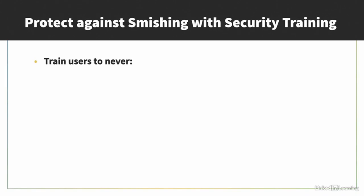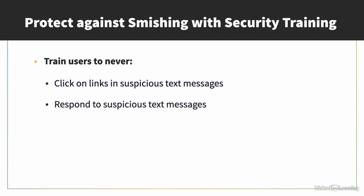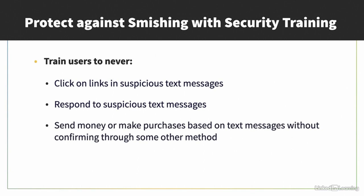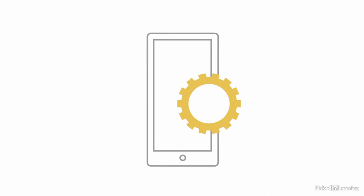When it comes to smishing, the best way to protect against this threat is also with security training. Train users how to spot suspicious text messages. They should be trained to never click on links in suspicious text messages, respond to suspicious text messages, or send money based on text messages without confirming through some other method like a phone call. If you get repeated unwanted text messages from the same number, those can be blocked in the phone settings for both iPhone and Android. Also, check to see if your smartphone has other settings options to filter or block texts from unknown senders.